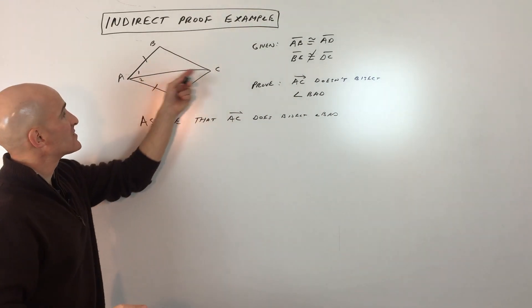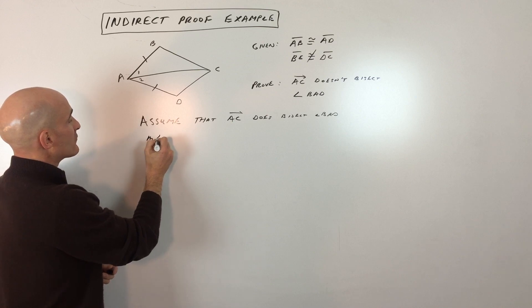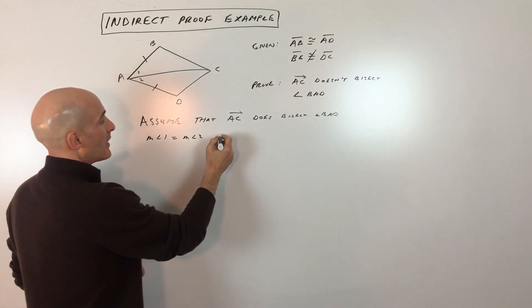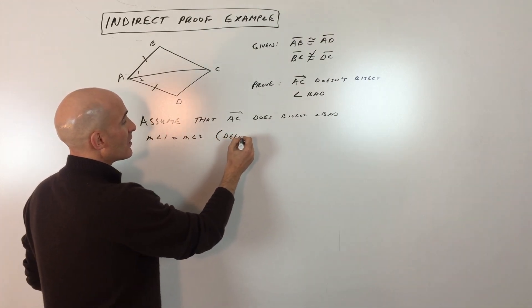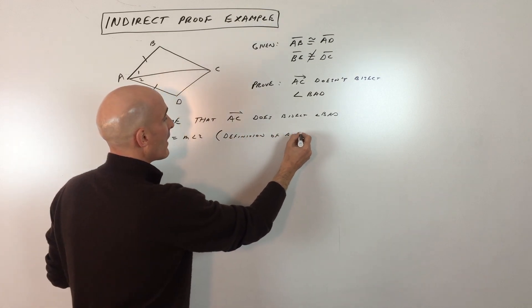If we assume this does bisect, then we know that the measure of angle one is equal to the measure of angle two. That's by the definition of an angle bisector.